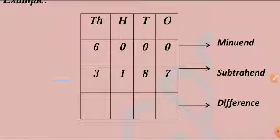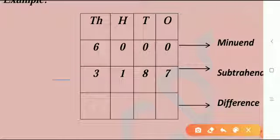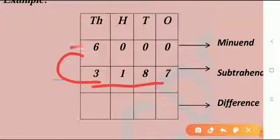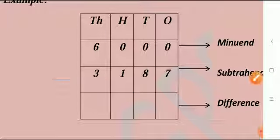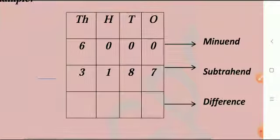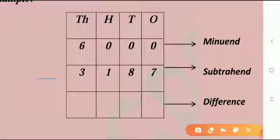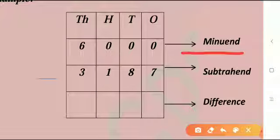Here we have to subtract 3187 from 6000. So first of all, we will write the numbers in the place value column with the larger number above the smaller number as shown here. 6000 is minuend and 3187 is subtrahend.